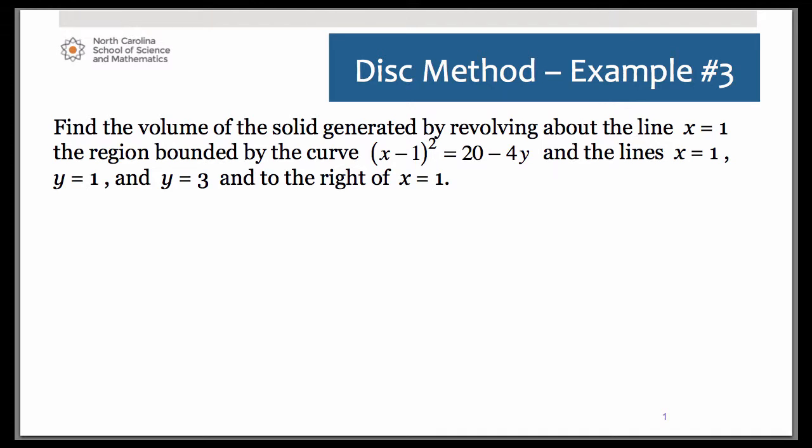So if you take a look at the problem, we are trying to find the volume of the solid generated by revolving about the line x equals 1, so that's our axis of revolution. The region bounded by the curve (x - 1)² = 20 - 4y, also bounded by the lines x = 1, y = 1, and y = 3 to the right of x = 1. That's a lot to take in.